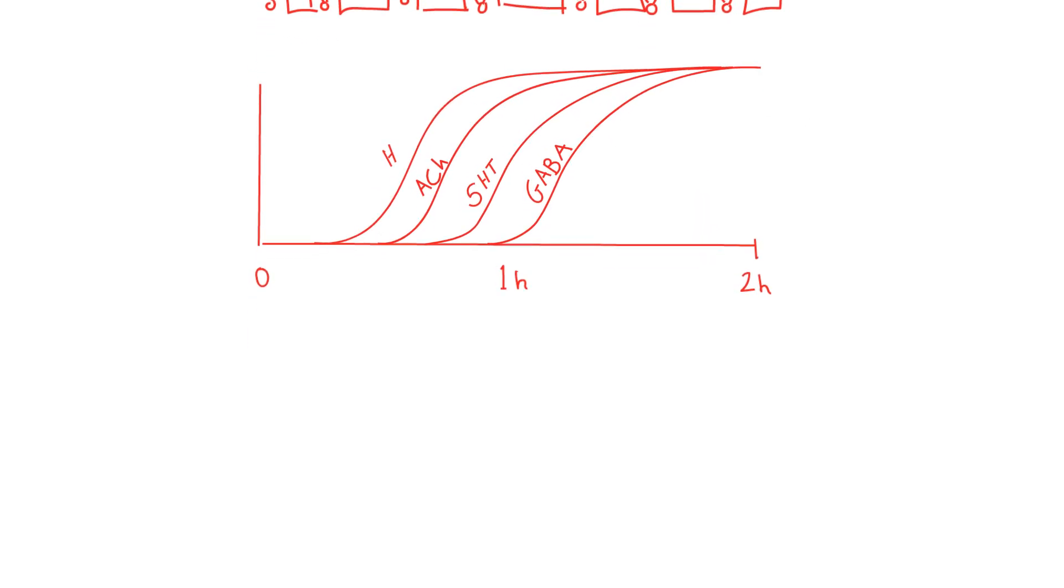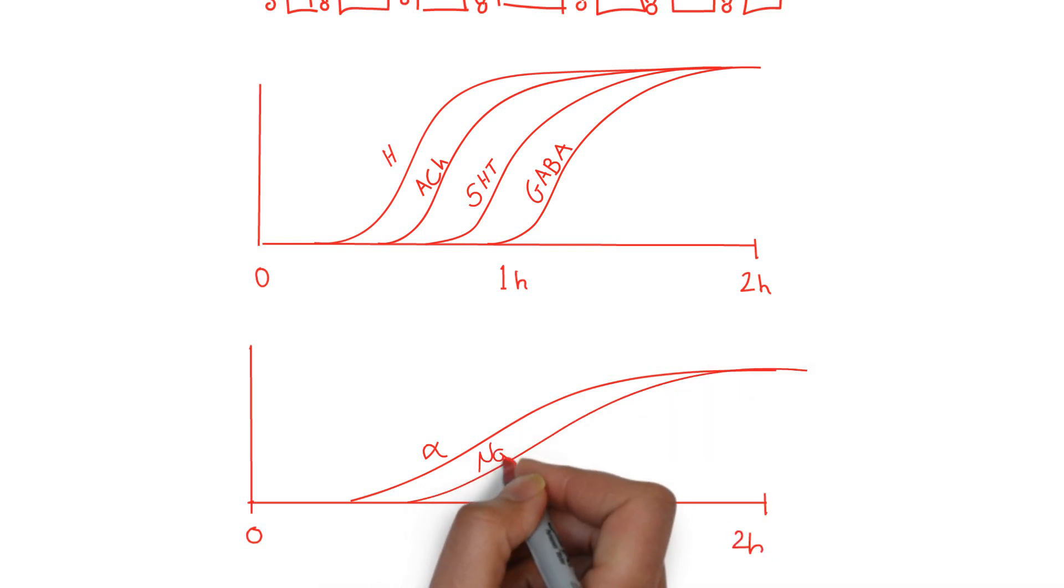Concurrently, there's cardiovascular effects. The anti-alpha properties of TCAs present as hypotension with tachycardia and can start very early in the patient's presentation. There are also signs of sodium channel and potassium channel blockade early in the toxidrome, but do not reach clinical significance until later.